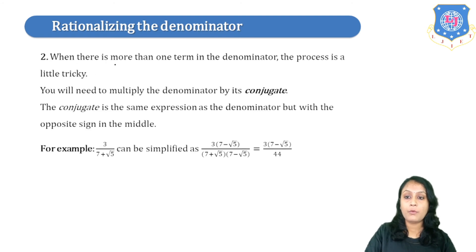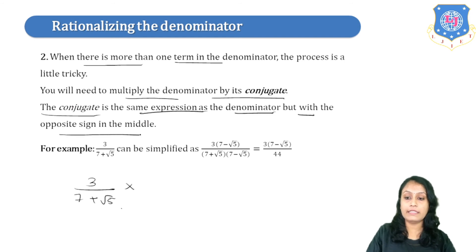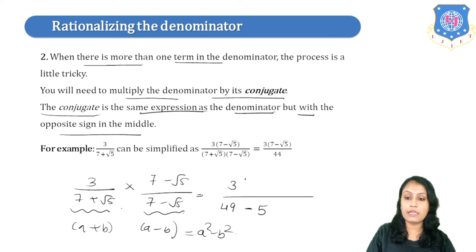When there is more than one term in the denominator, you need to multiply by its conjugate. The conjugate is the same expression as the denominator but with the opposite sign in the middle. For example, if we have 3 upon (7 + √5), the conjugate is 7 − √5. We apply the formula (A+B)(A−B) = A²−B². So in the denominator, we get 49 − 5 = 44, and the numerator is 3(7 − √5). On simplification, the answer is 3(7 − √5) upon 44.